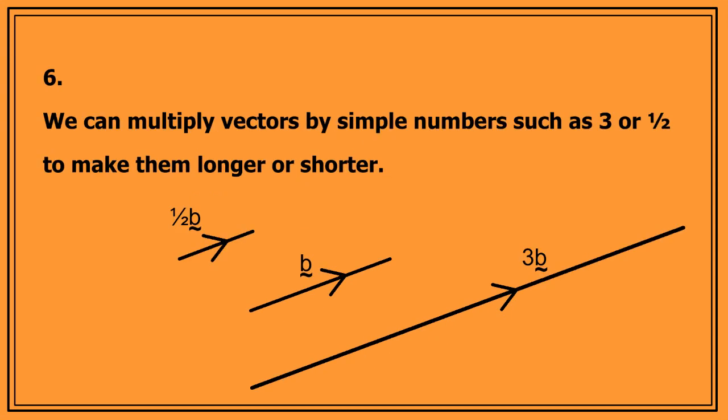And six, we can multiply vectors by simple numbers such as three or a half to make them longer or shorter. In other words, they represent larger or smaller quantities.